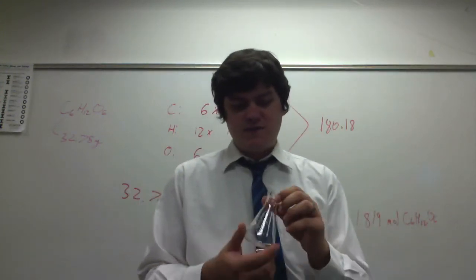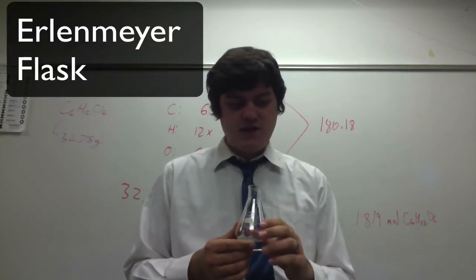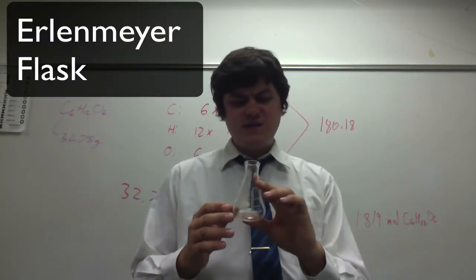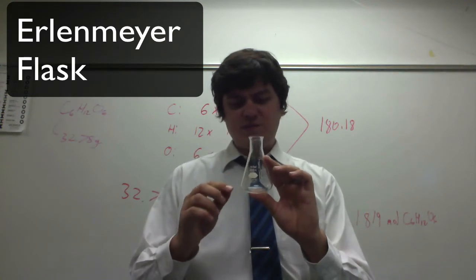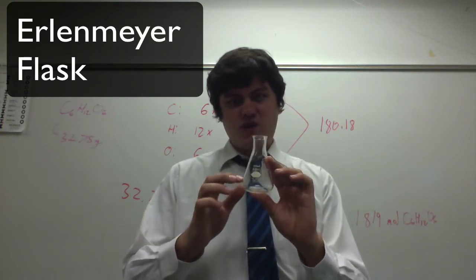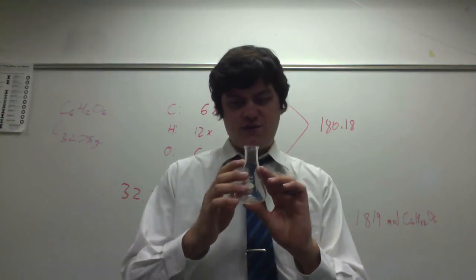Next we'll talk about an Erlenmeyer flask. These also vary in size. They're similar to a beaker but you'll notice that the shape is different. They kind of take a triangle shape up to the point where the mouth is.